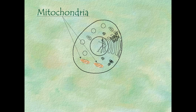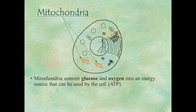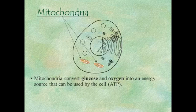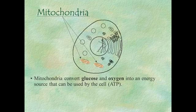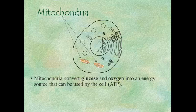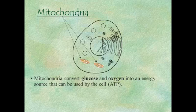The last organelle we're going to talk about are mitochondria. You may have learned a simplified function — we often talk about them as being the power plant or powerhouse of the cell. We want to use a more sophisticated definition: what mitochondria do is convert glucose and oxygen into an energy source that the cell can use, and the name of that energy source is ATP.